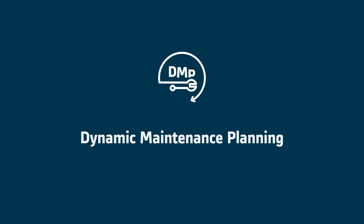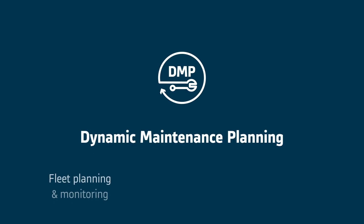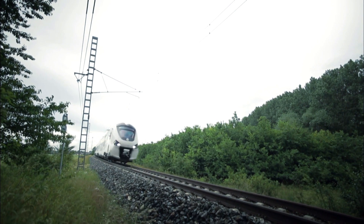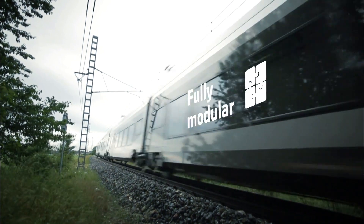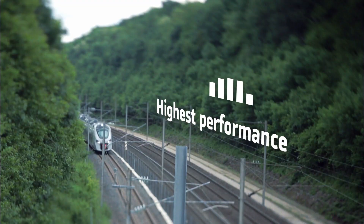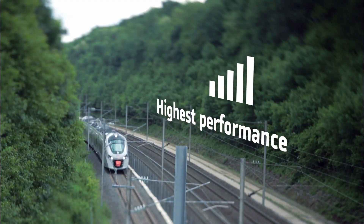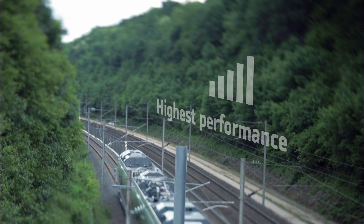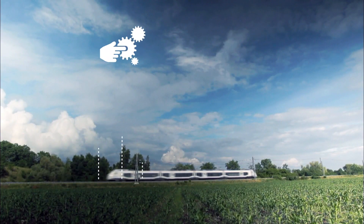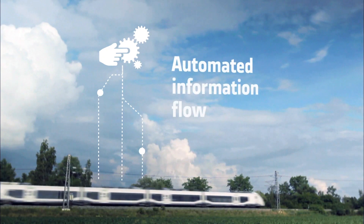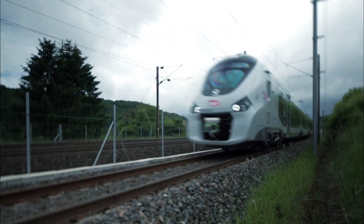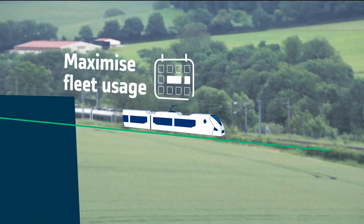Have you heard of Alstom Dynamic Maintenance Planning? This is the first fully modular solution which enables tackling maintenance from A to Z in every kind of project. With the Dynamic Maintenance Planning, automate your information flow, reduce your over-maintenance and increase your efficiency.